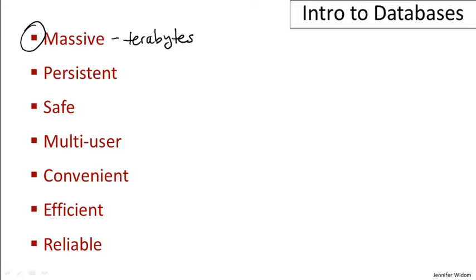Secondly, the data handled by database management systems is typically persistent. The data in the database outlives the programs that execute on that data. In a typical computer program, the program will start, variables will be created, data will be operated on, the program will finish, and the data will go away. It's the other way with databases — the data sits there, and then a program will start up, operate on the data, the program will stop, and the data will still be there. Very often, multiple programs will be operating on the same data.